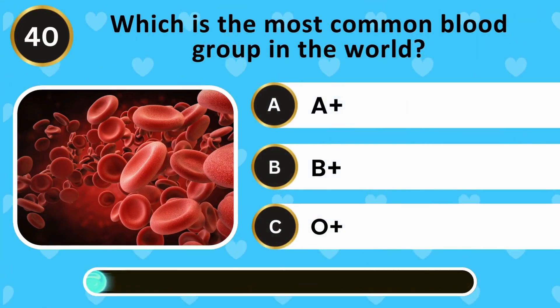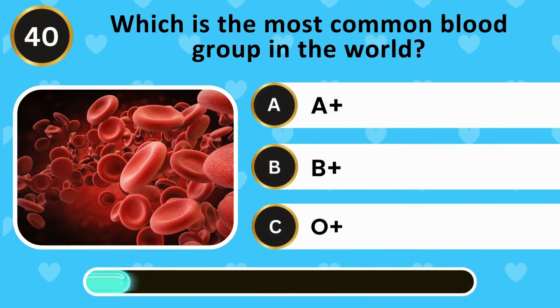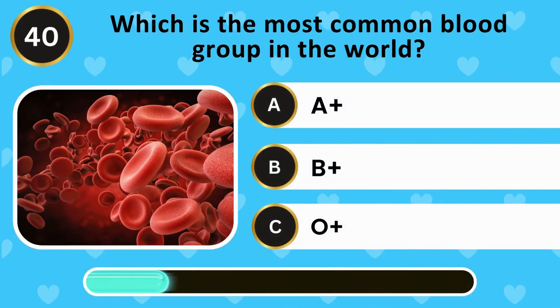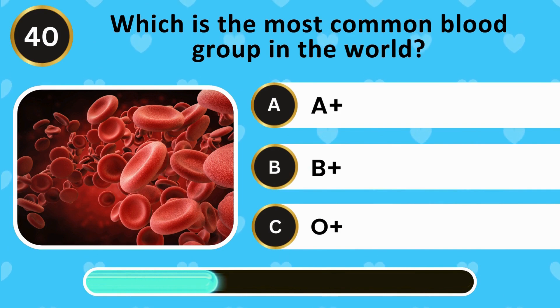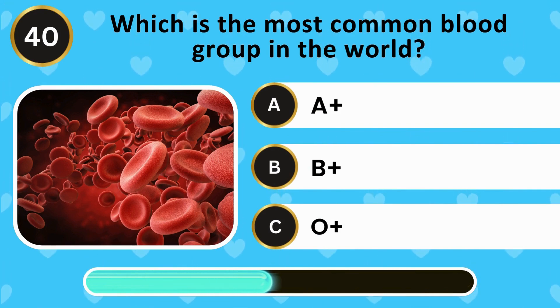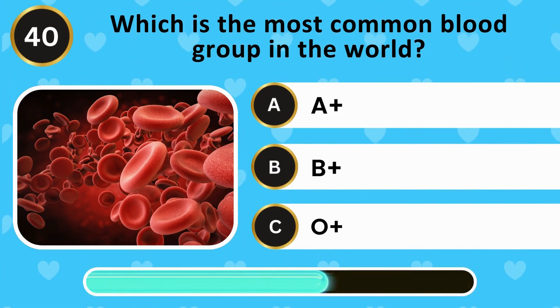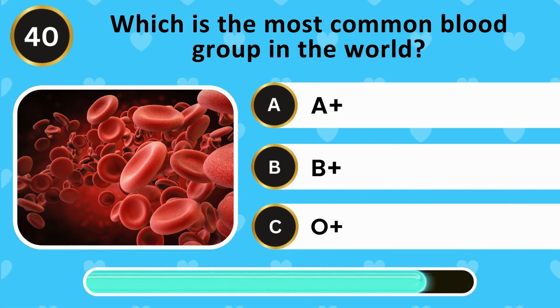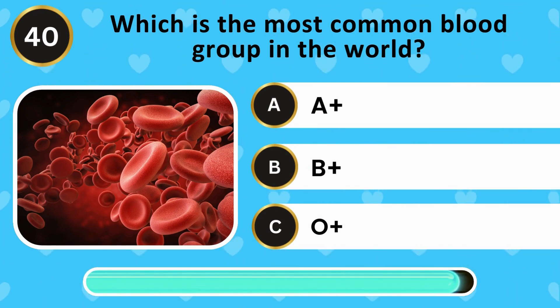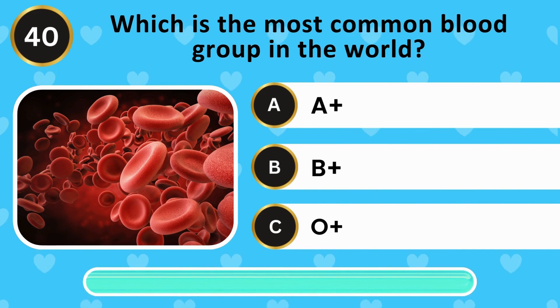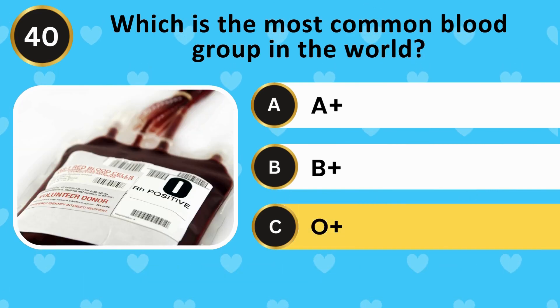Which is the most common blood group in the world? A positive, B positive, O positive. The answer is O positive.